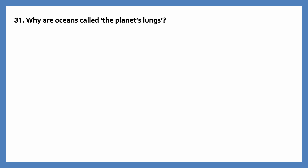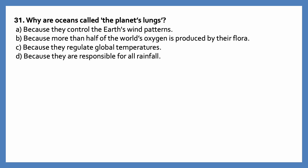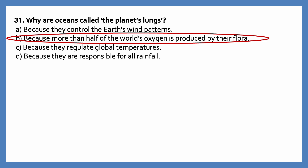Why are oceans called the planet's lungs? Options are: because they control the earth's wind patterns; because more than half of the world's oxygen is produced by their flora; because they regulate global temperatures; because they are responsible for all rainfall. The correct answer is because more than half of the world's oxygen is produced by their flora.